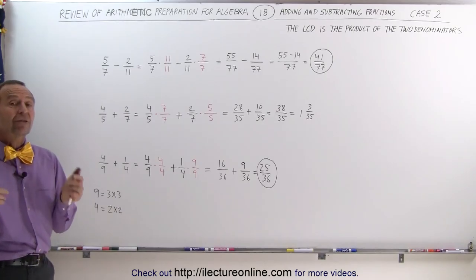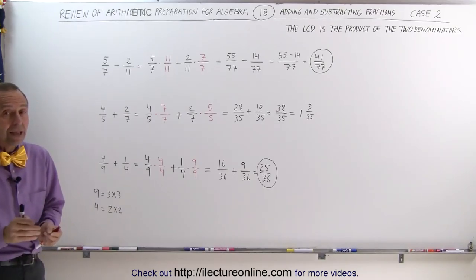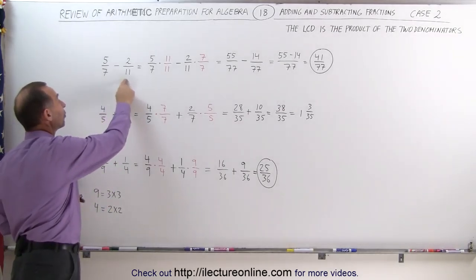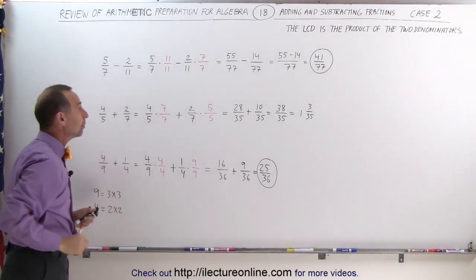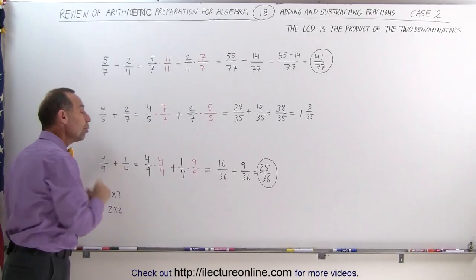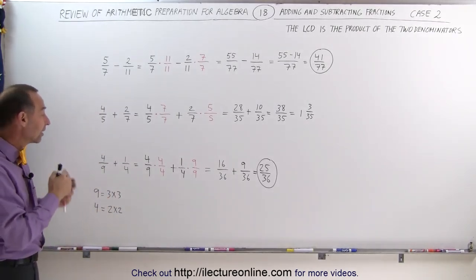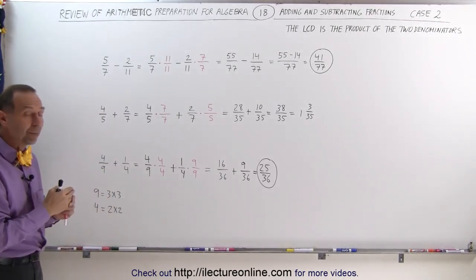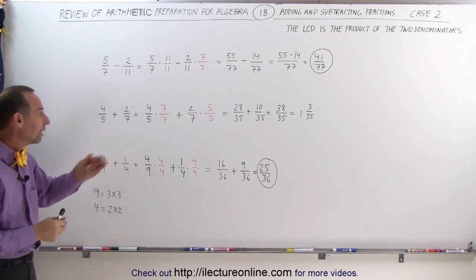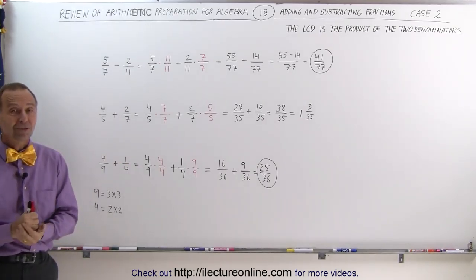That is how you add or subtract fractions when the denominators are not the same — either when the two denominators are prime numbers, or when the two denominators have no factors in common at all. You find the common denominator simply by multiplying the two denominators together, and you proceed in the fashion shown. And that's how it's done.